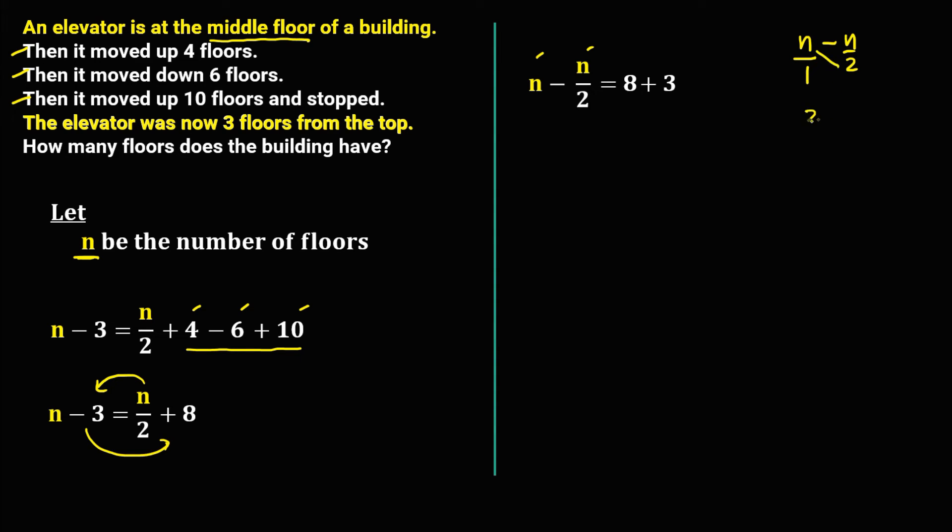Over, that's positive 2. So this n minus n over 2 is equal to, then equals 8 plus 3, that's 11.